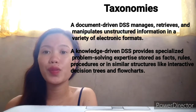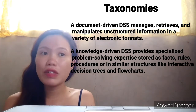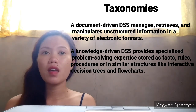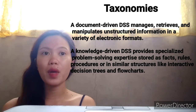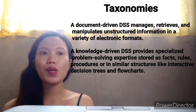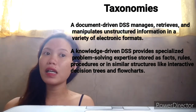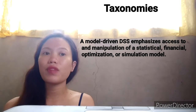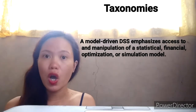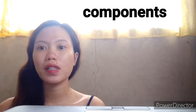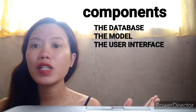A document-driven DSS manages, retrieves, and manipulates unstructured information in a variety of electronic formats. A knowledge-driven DSS provides specialized problem-solving expertise stored as facts, rules, procedures, or similar structures. A model-driven DSS emphasizes access to and manipulation of statistical, financial, optimization, and simulation models. The components of a Decision Support System are the database, the model, and the user interface.